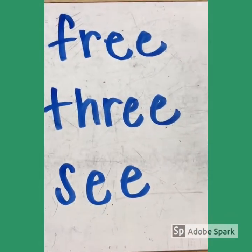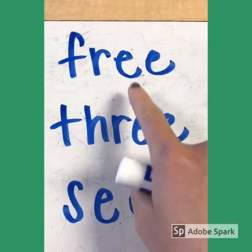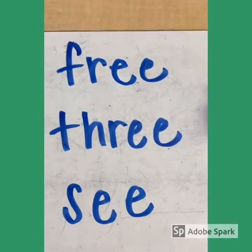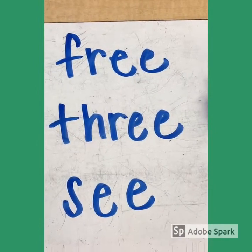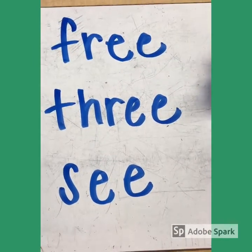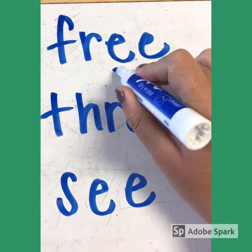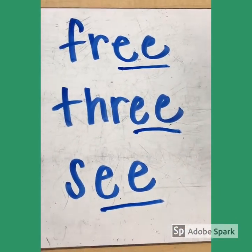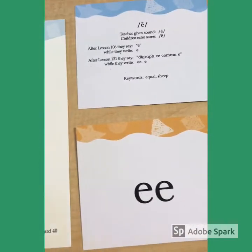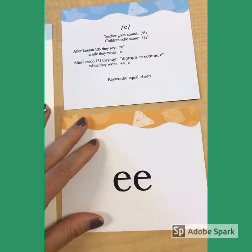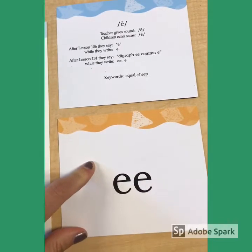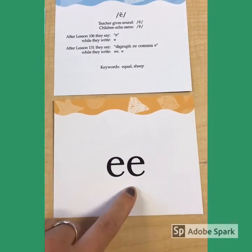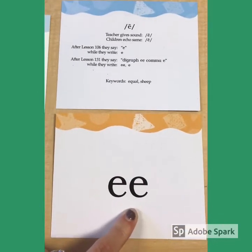We are learning a new digraph today. This is called digraph EE. I'm going to code these words. And we code a digraph with what — do you remember? Yeah, we underline digraphs. We're going to underline our EE. So now because we're learning a new digraph, we get a new spelling card and a new letter card. When we see this double E, we know that this is digraph EE and it makes the EE sound.